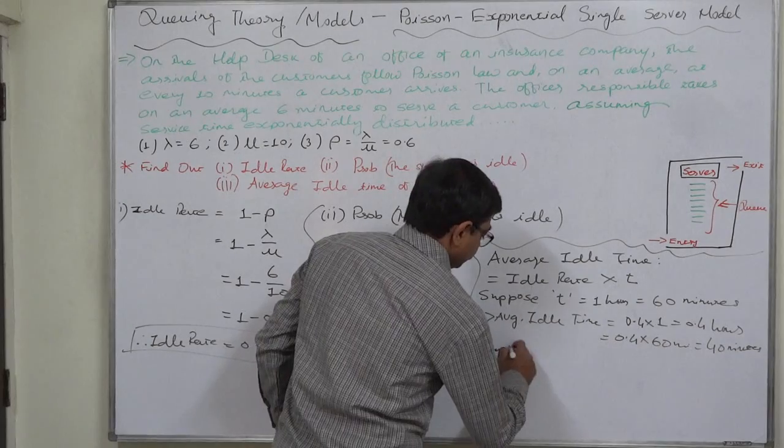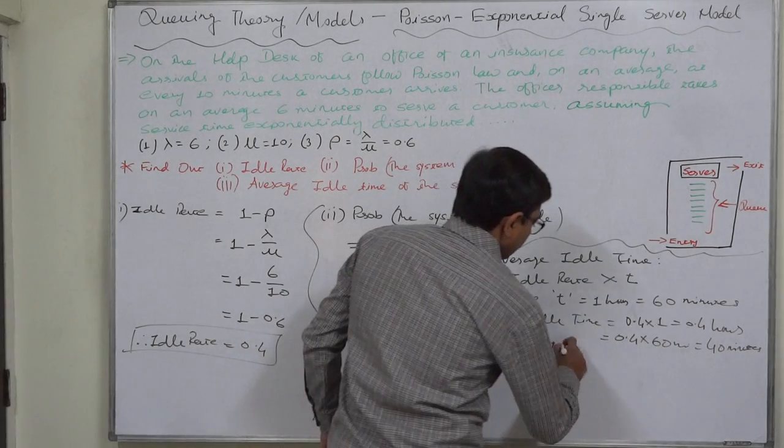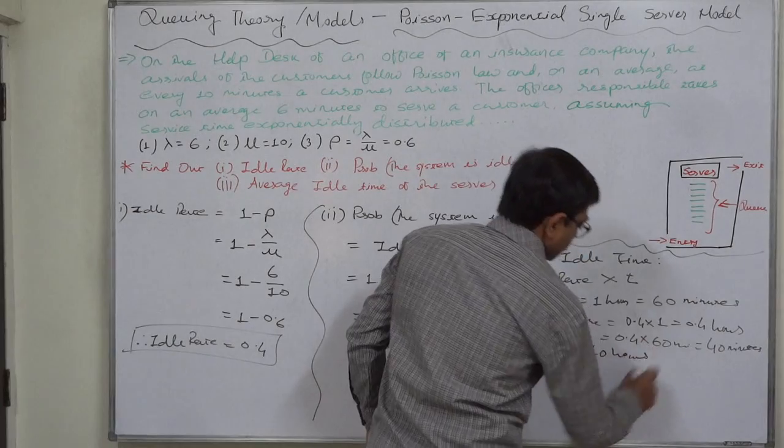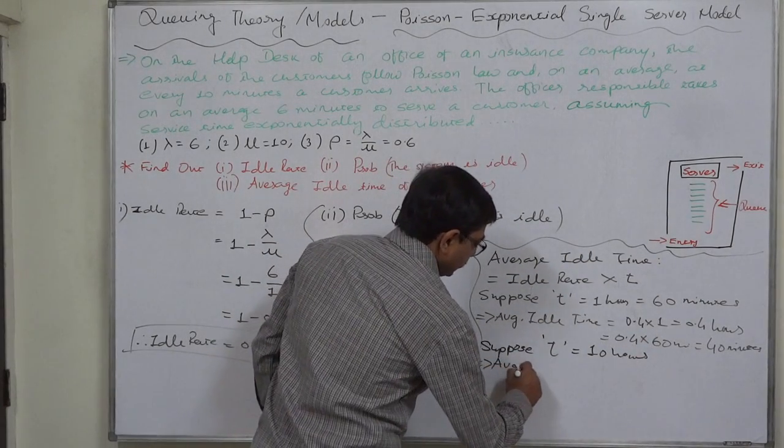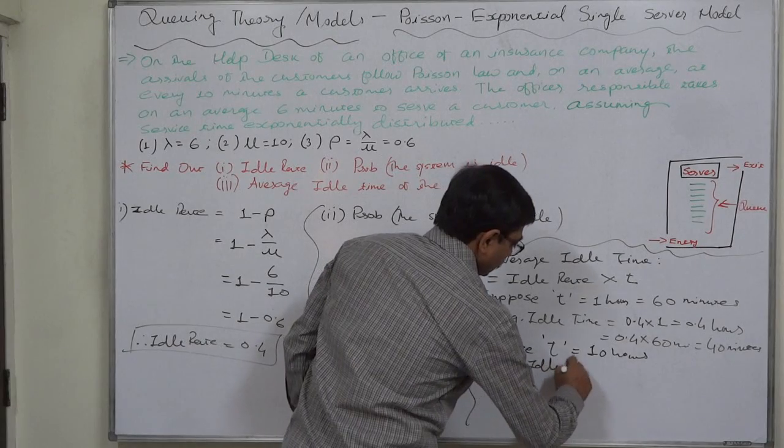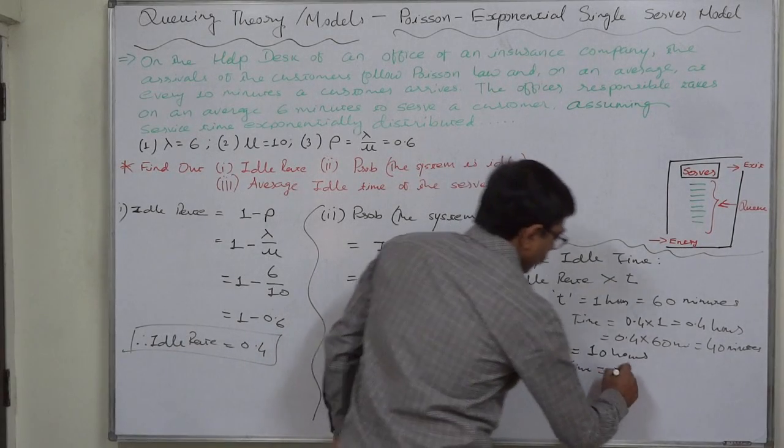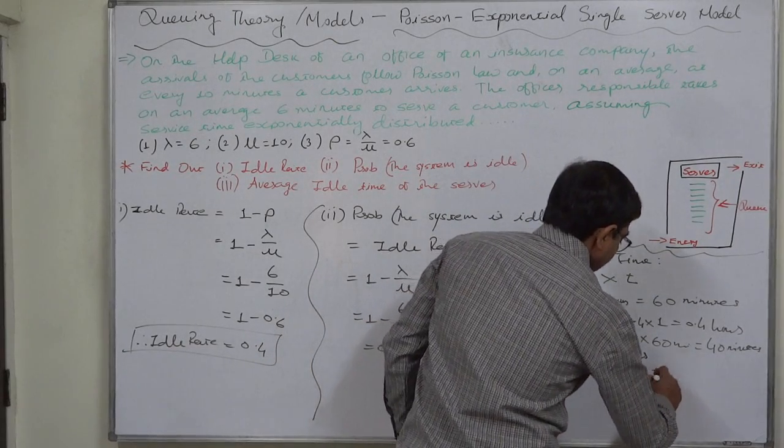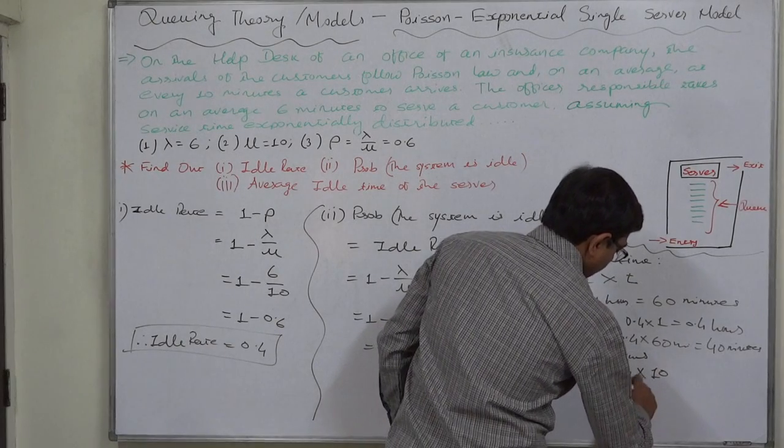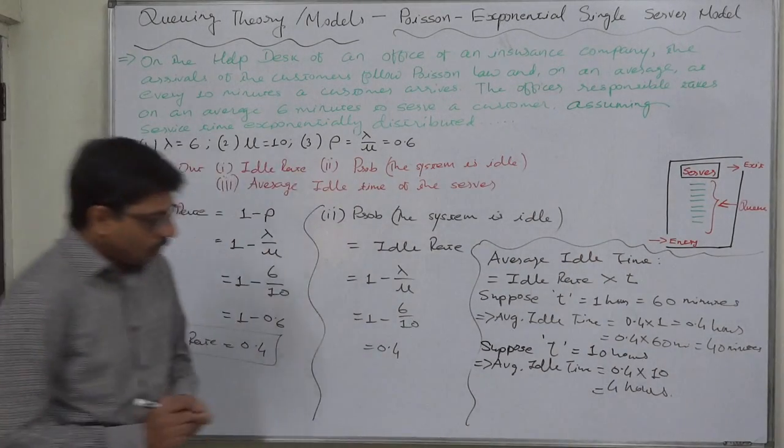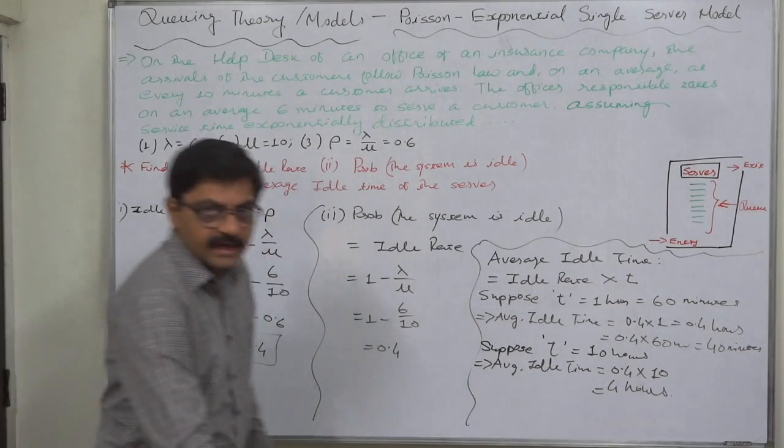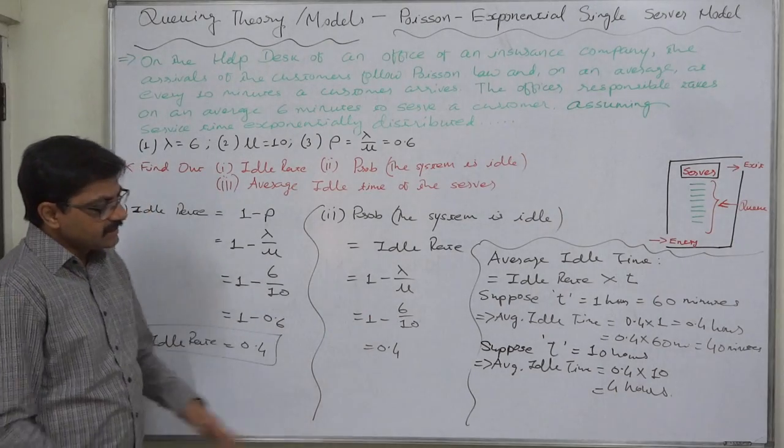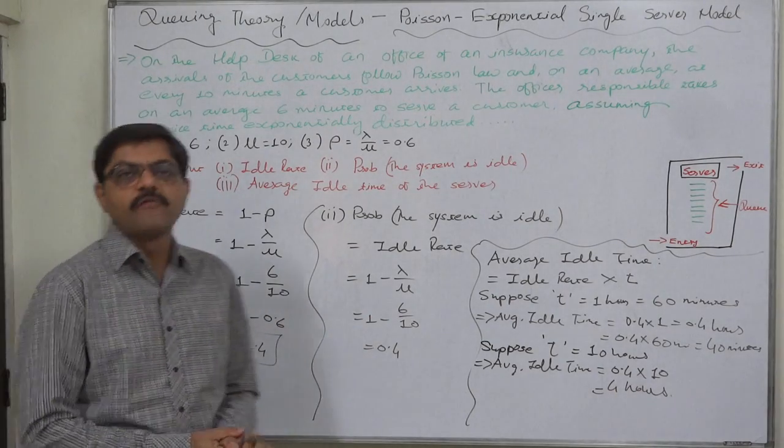So, suppose T equals 10 hours, a working day. Then, the average idle time will be 0.4 into 10 hours, that is 4 hours. So, in a day made up of 10 working hours, the server will be idle for 4 hours.